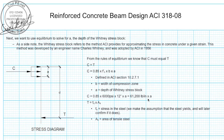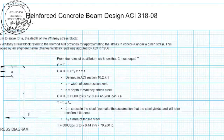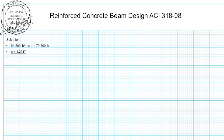We're assuming fs equals the yield stress, and we will confirm this by checking that the calculated strain in the steel is greater than the yield strain. The area of tensile steel A_s is three number six bars, so 3 × 0.44 in² = 1.32 in². The tension force equals 60,000 psi × 1.32 in² = 79,200 pounds. Setting C equal to T: 61,200 × a = 79,200 pounds, giving us a = 1.294 inches.